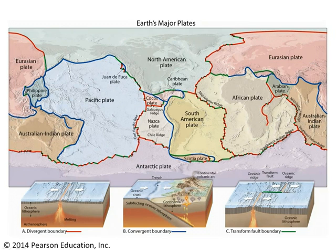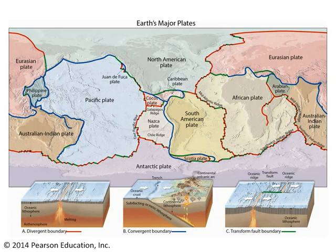Plates can move apart from one another, in which case we call them divergent. They can move towards one another, in which case we call them convergent. Or they can move simply past one another, sliding along with lateral motion. What we want to focus on here today are the examples where the plates are moving towards one another — the convergent plate boundaries.